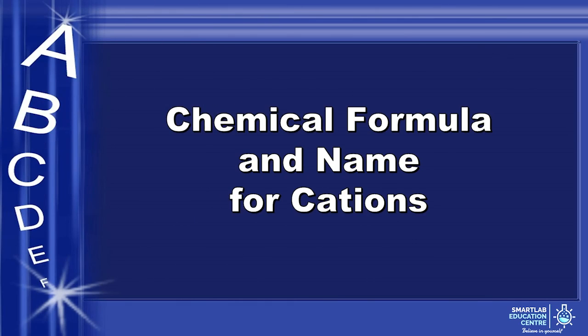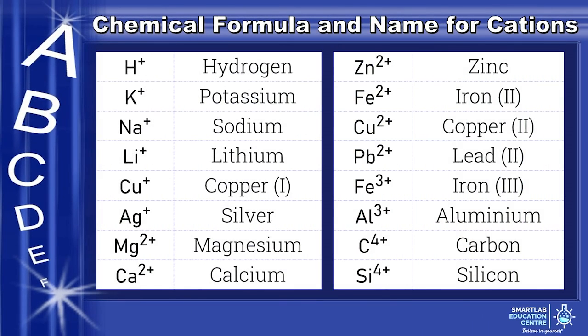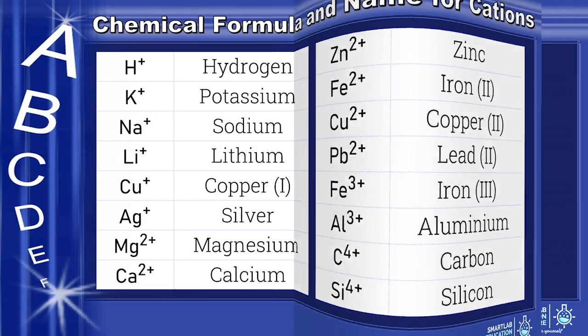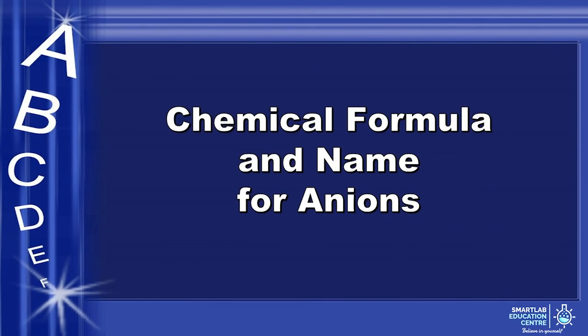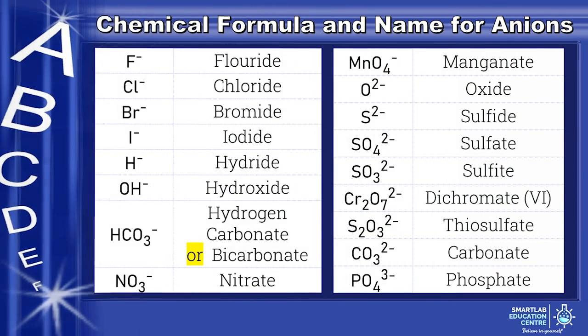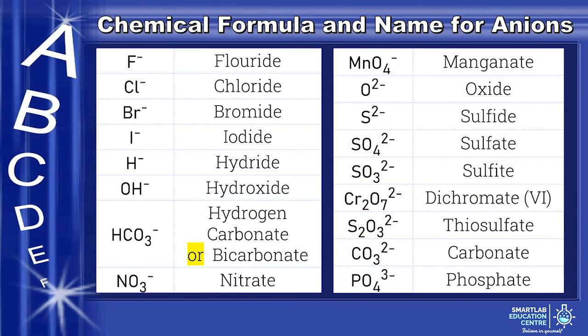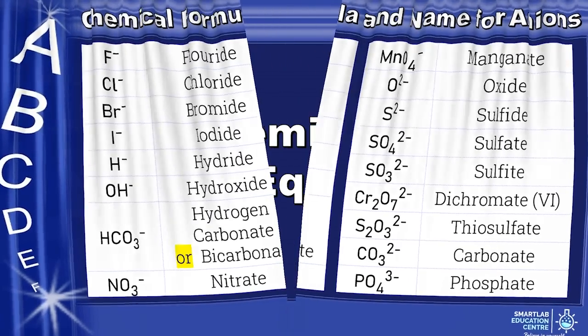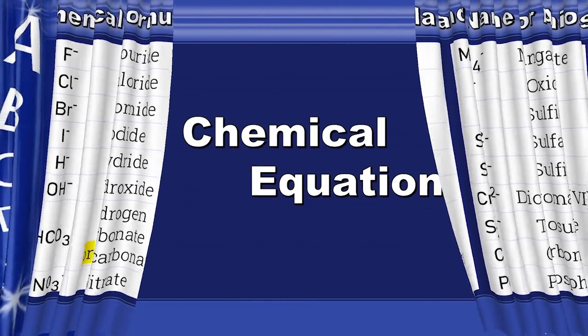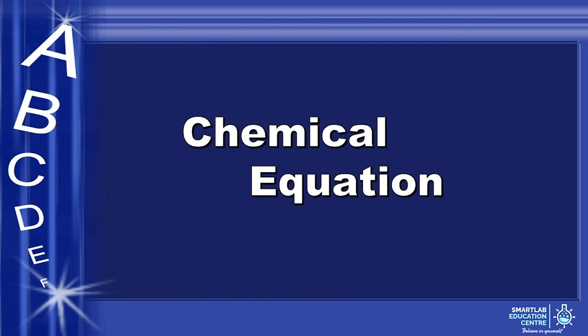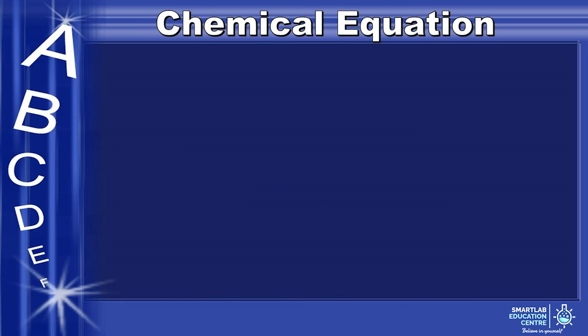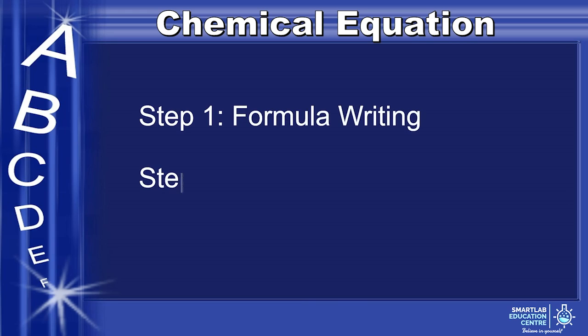Next, let's take a look at the chemical formula and name of common cations and anions. Finally, we arrive at the last topic for today, chemical equation. For every chemical equation, you need to first figure out the chemical formulas of the reactants and the products, and then you need to balance the equation.